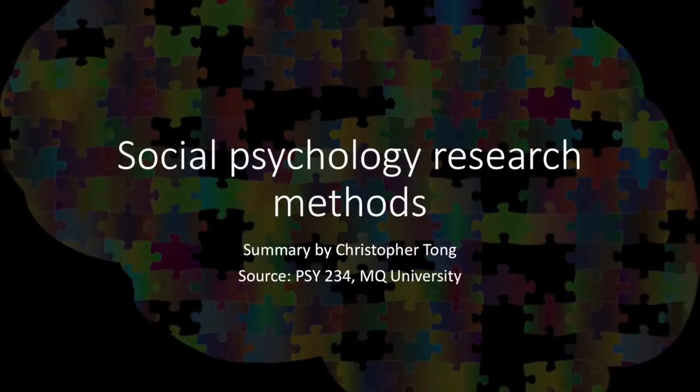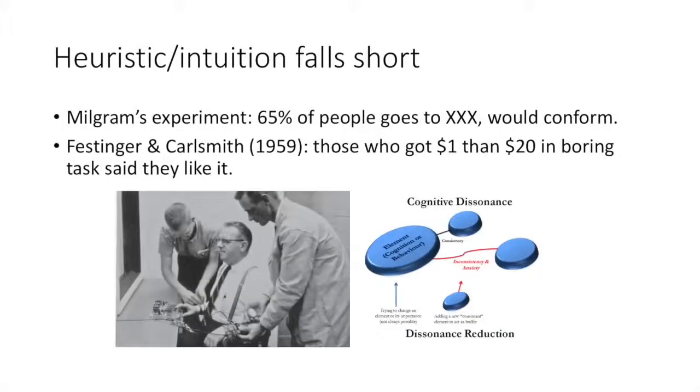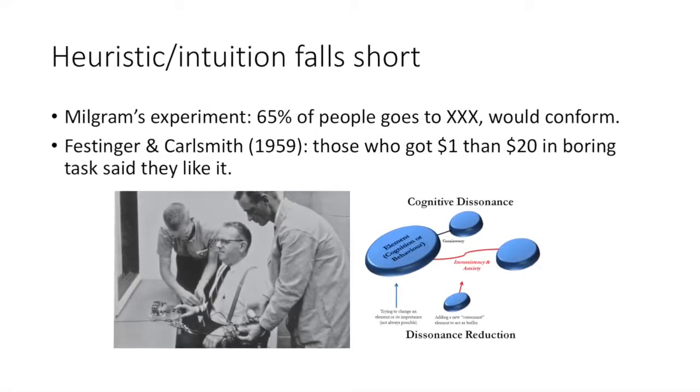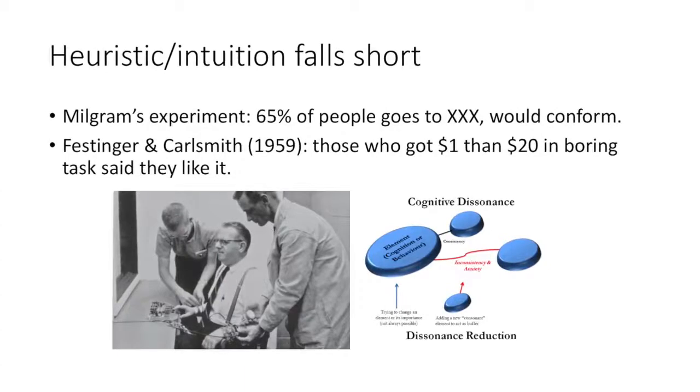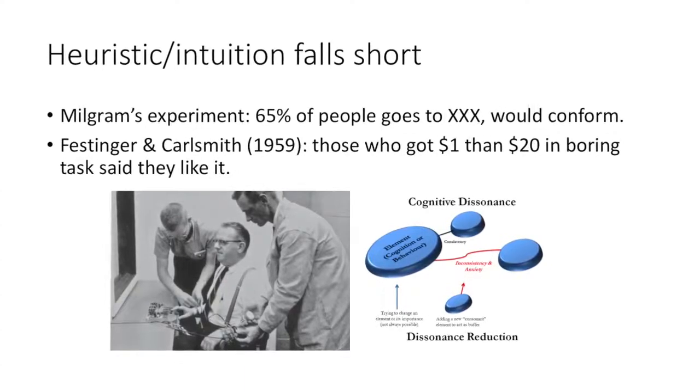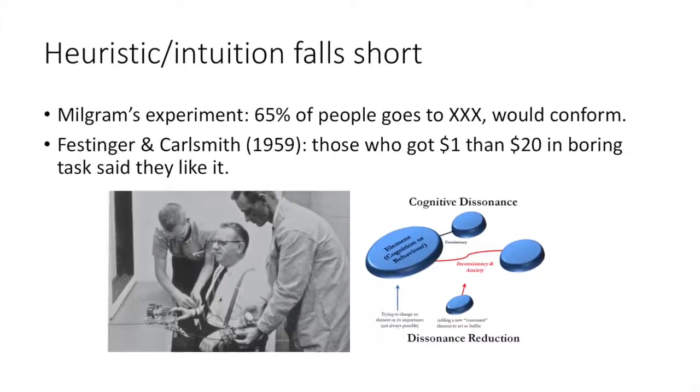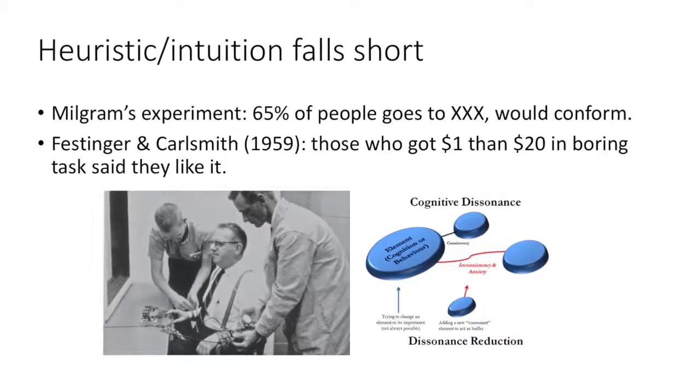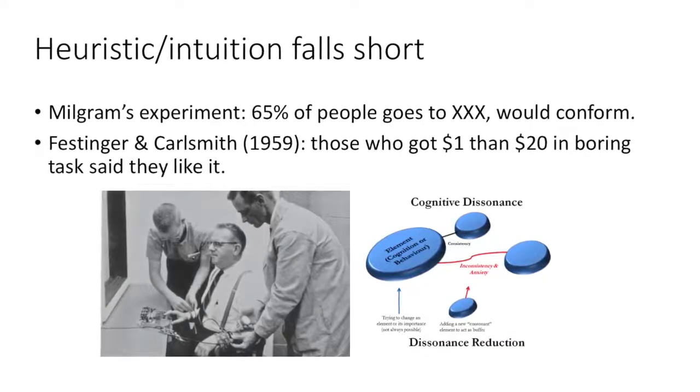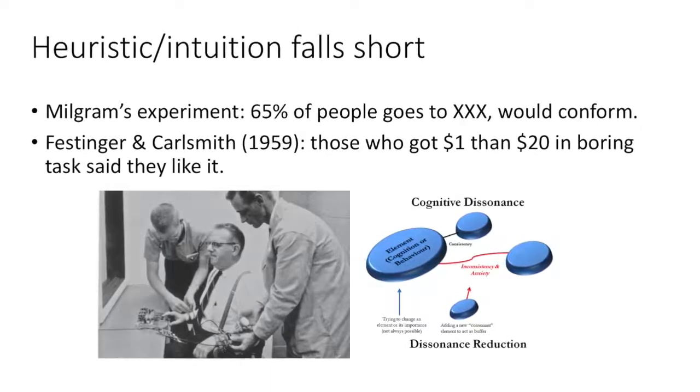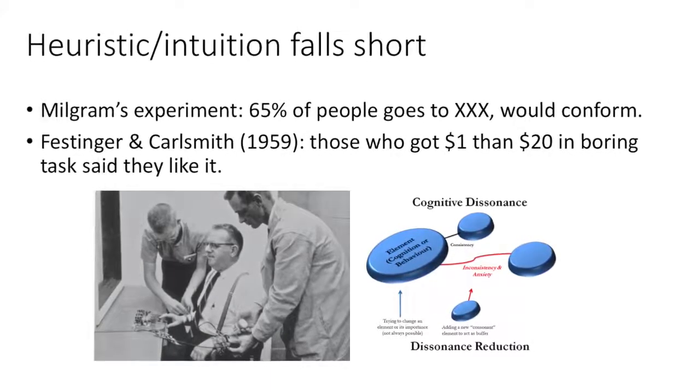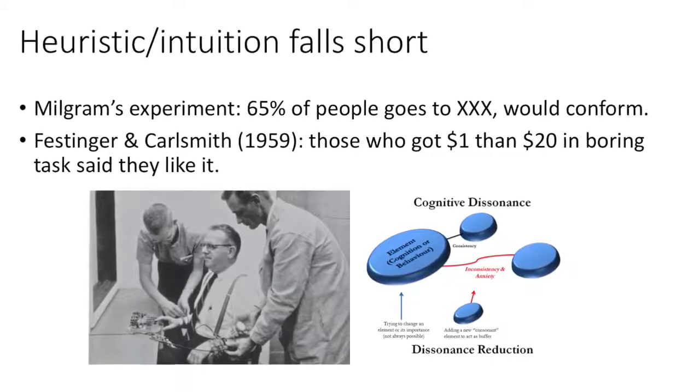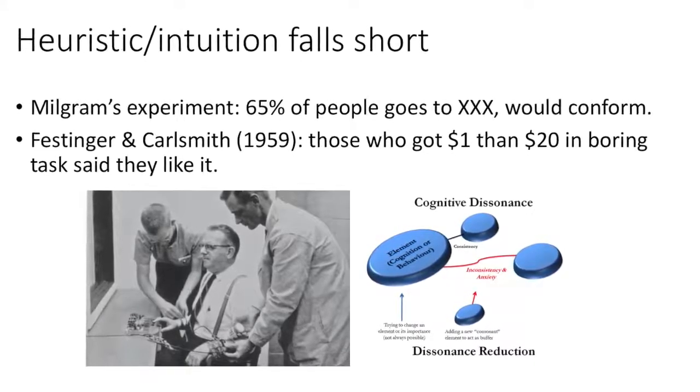An example of this is Milgram's experiment in which 65% of people went up to lethal electric shock, which found that humans would conform to the situation as opposed to abiding by their own moral conscience. Festinger and Carlsmith in 1959 discovered that those who got $1 as opposed to those who got $20 stated that they enjoyed a very boring task.